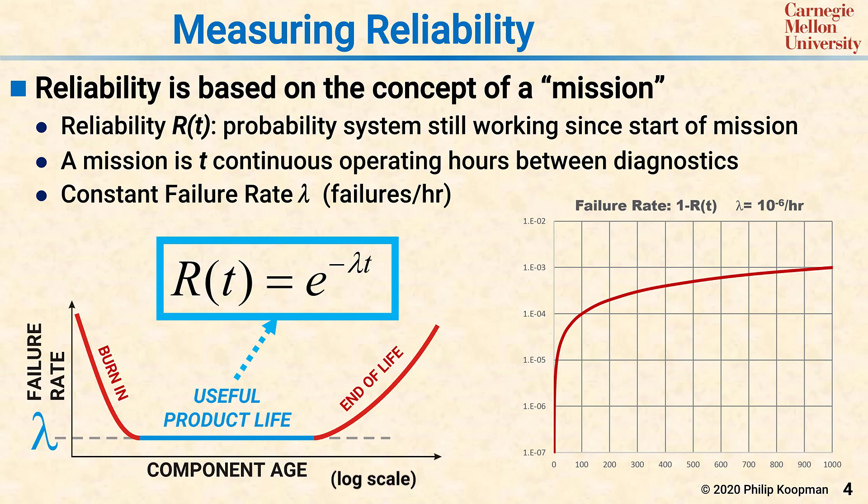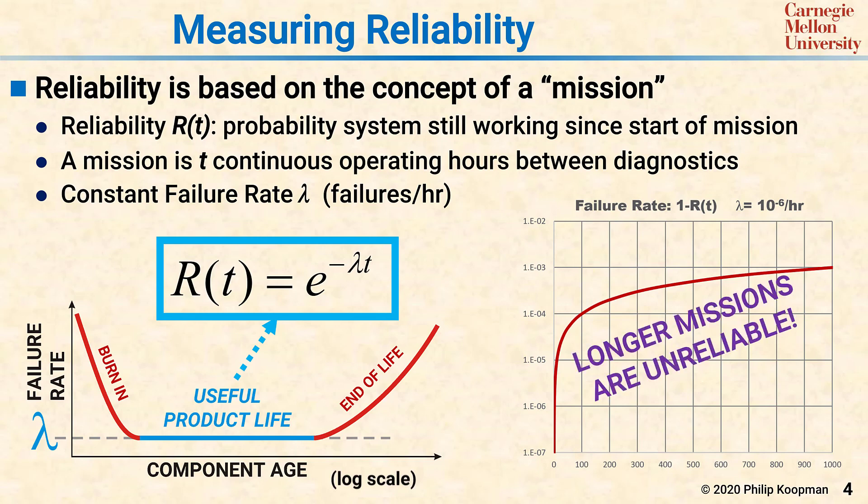Thus, if you need to run a lot of long missions, you need very aggressively low values of lambda, much lower than 10^-6 per hour at the system level. Some systems operate continuously, so the idea of a mission is a little tricky. What you need to do is occasionally take the system offline to perform diagnostic tests to restart the mission clock. Often you do that by having two systems — a primary and a standby — and switching between them so that the offline one of the redundant pair can be diagnosed and restart its mission.